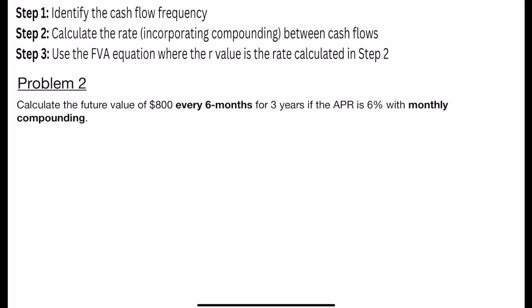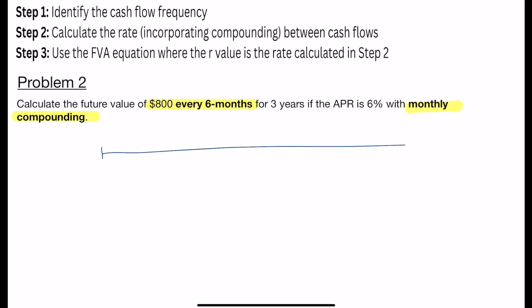Now let's look at another one. So in this problem, we have $800 every six months for three years, and the APR is 6% with monthly compounding. Now first, let me draw out a timeline. And thinking about my timeline, I have three years. My cash flow happens every six months. I want to find the future value. And my APR is 6% with monthly compounding. So first thing I want to start with is cash flow frequency. So my cash flow frequency is essentially semi-annual, or every six months.